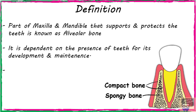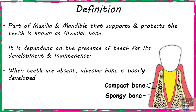What this means is that when the teeth are present, the alveolar bone is well developed, and when teeth are absent, alveolar bone is poorly developed. The diagram at the bottom of the page shows the alveolar bone supporting a tooth, which comprises both compact and cancellous bone.